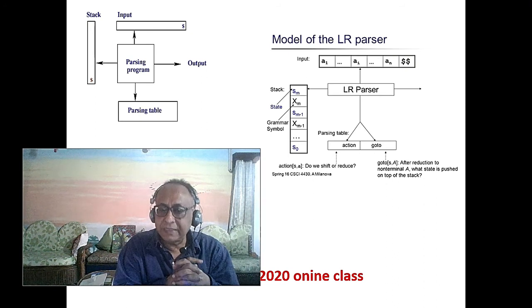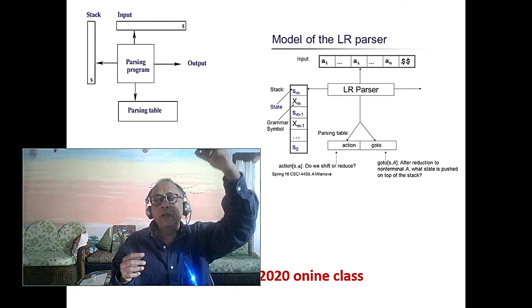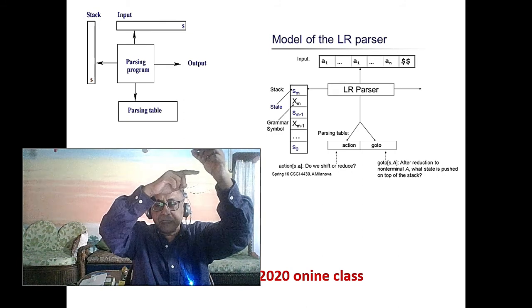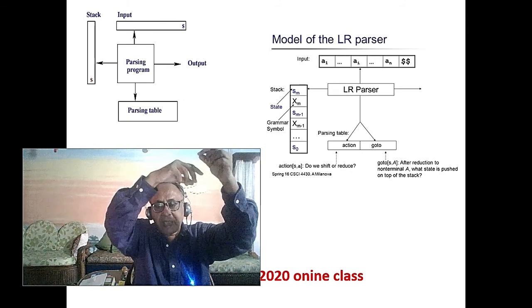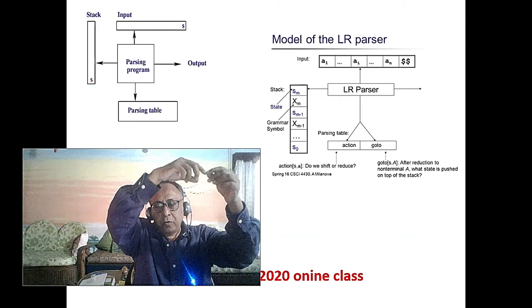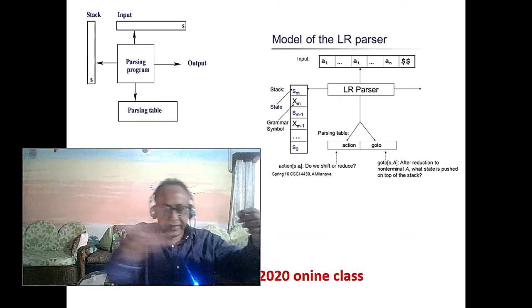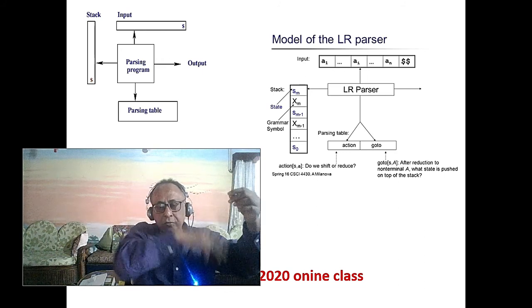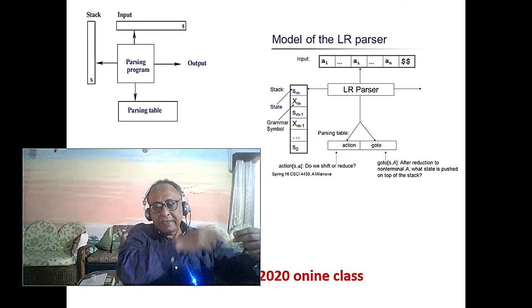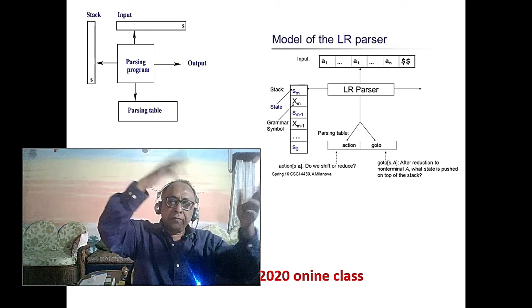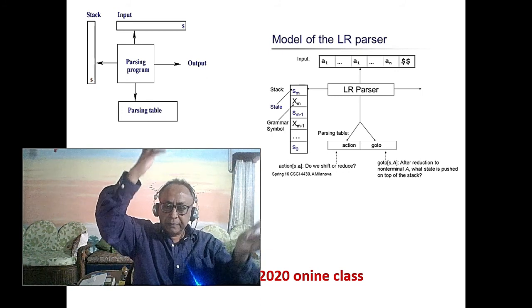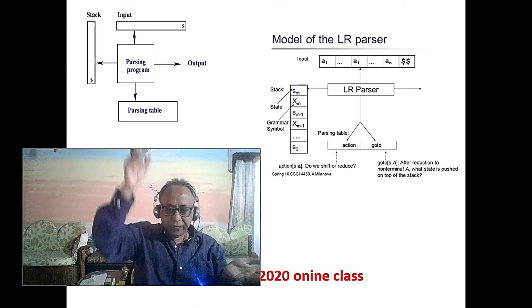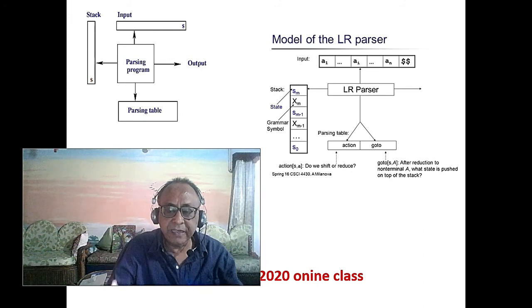Then you come to know depth-first search. In depth-first search, whenever you visit the root node, you push the children into the stack, then go to the leftmost child. There are several children — you push all to the stack, then visit the eldest child again, then you come back. So with a stack you can traverse depth-first search. That is another great example of stack.